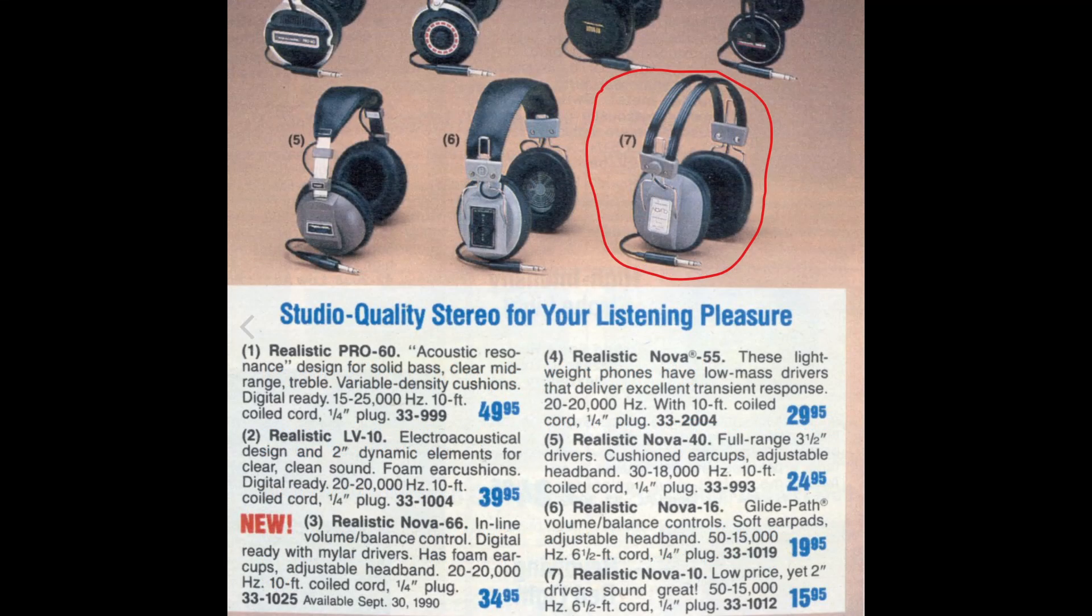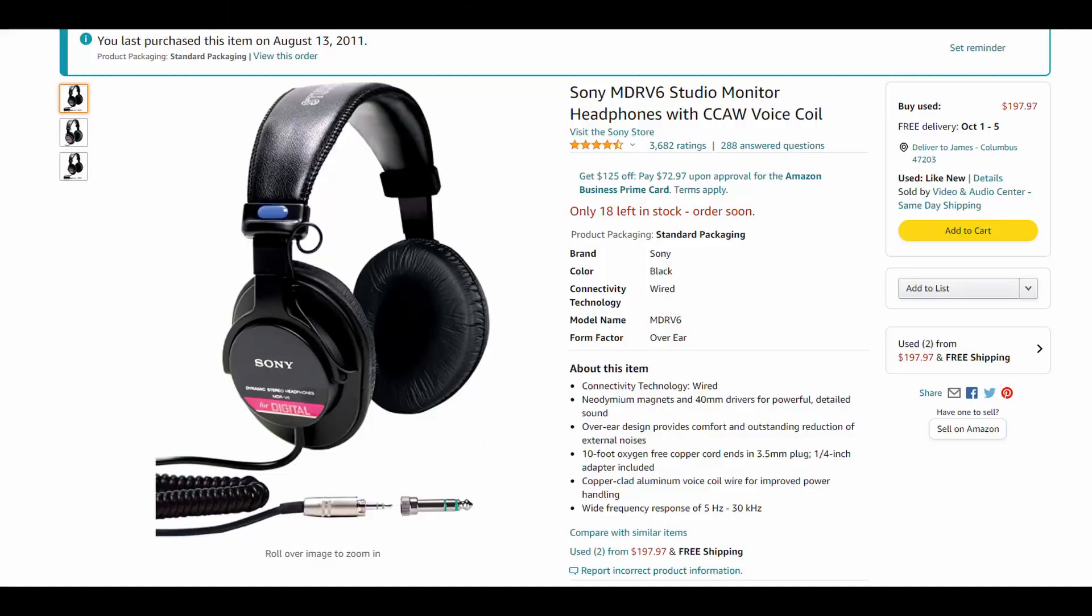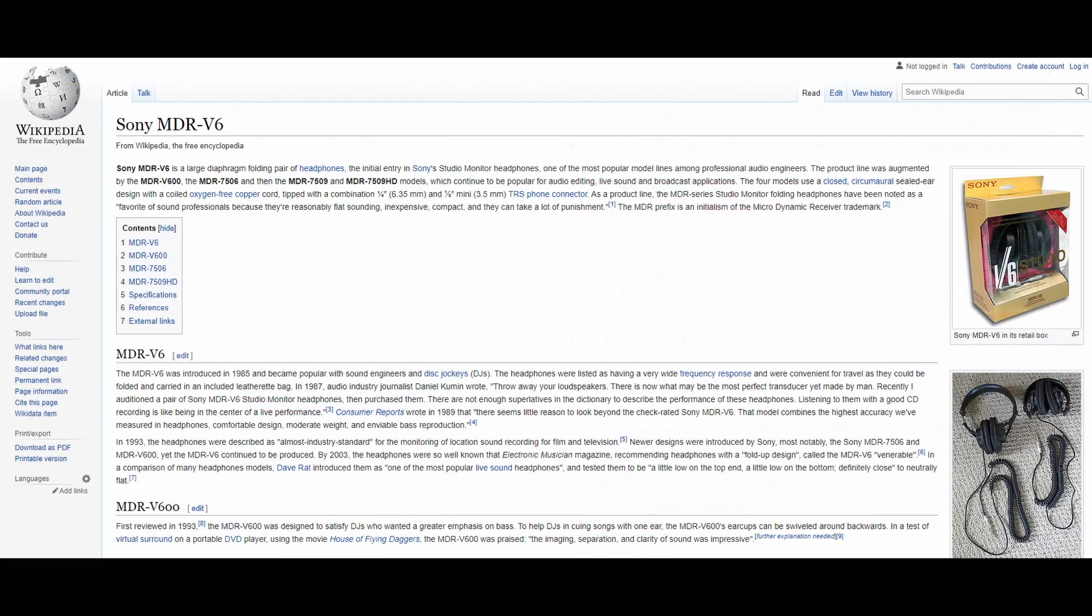Now in preparing for this video, I was remembering my first kind of big boy over-the-ear headphones, and there were these Nova 10s from Radio Shack. Of course on the internet you could find the old catalogs and here they are. I thought that was pretty neat to remember those things. Of course those headphones are long gone, and now I've got these Sony MDR-V6s I've had since 2011.